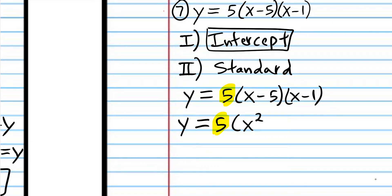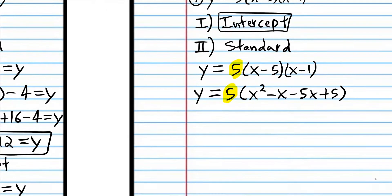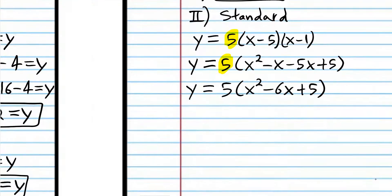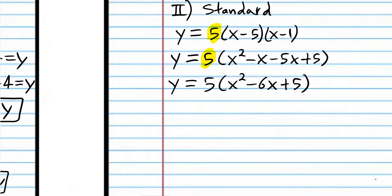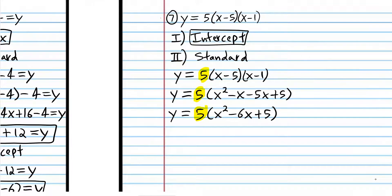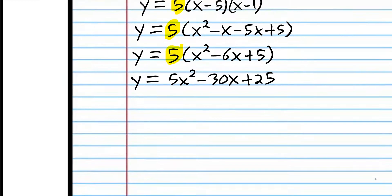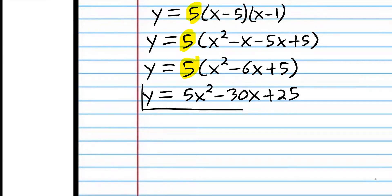Negative 5 times x is negative 5x, and negative 5 times negative 1 is positive 5. Negative x minus 5x is negative 6x. Now that we expanded part of that expression, we can distribute the 5: 5 times x squared is 5x squared, 5 times negative 6x is negative 30x, and 5 times 5 is 25. So that is standard form — we converted from intercept form to standard form.